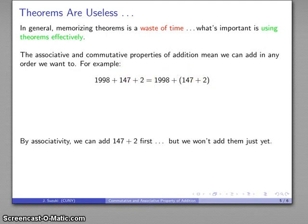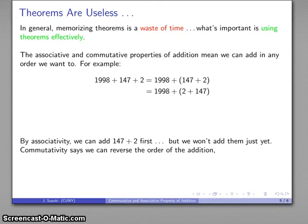I'm not going to add those two quite yet, because what I want to do is, I want to reverse the order of that addition. For the reasons for that will become apparent in a second, I can reverse the order, because commutativity says I get the same thing. 147 plus 2 is the same as 2 plus 147.